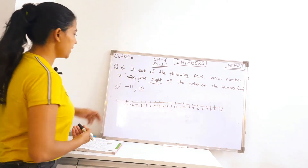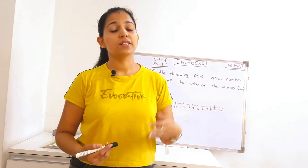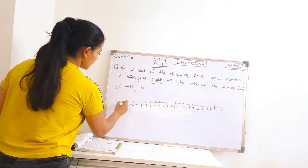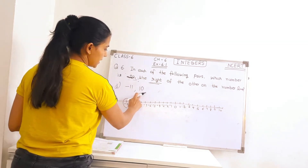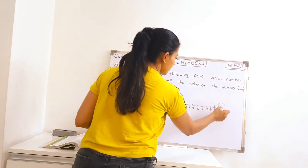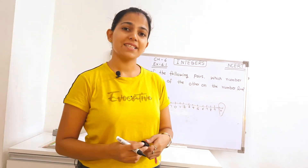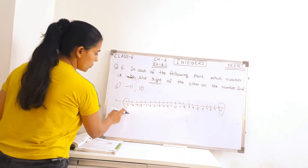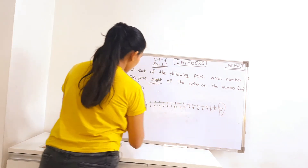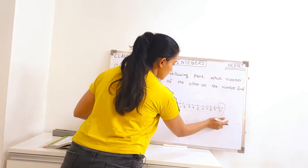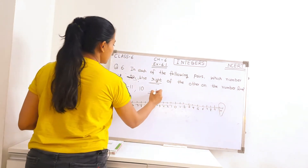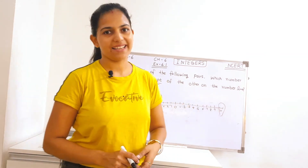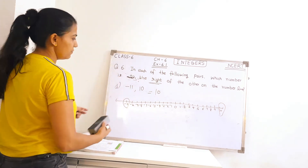So here we have minus 11 and 10, and we need to check which number is on the right side. Minus 11 is here, and where is 10? This is plus 10 — no sign means it is plus. 10 is here. So check which number is on the right side. Minus 11 is on the left and 10 is on the right of the number line. So our answer will be number 10. The number 10 is on the right side, between minus 11 and 10. Part D is done.